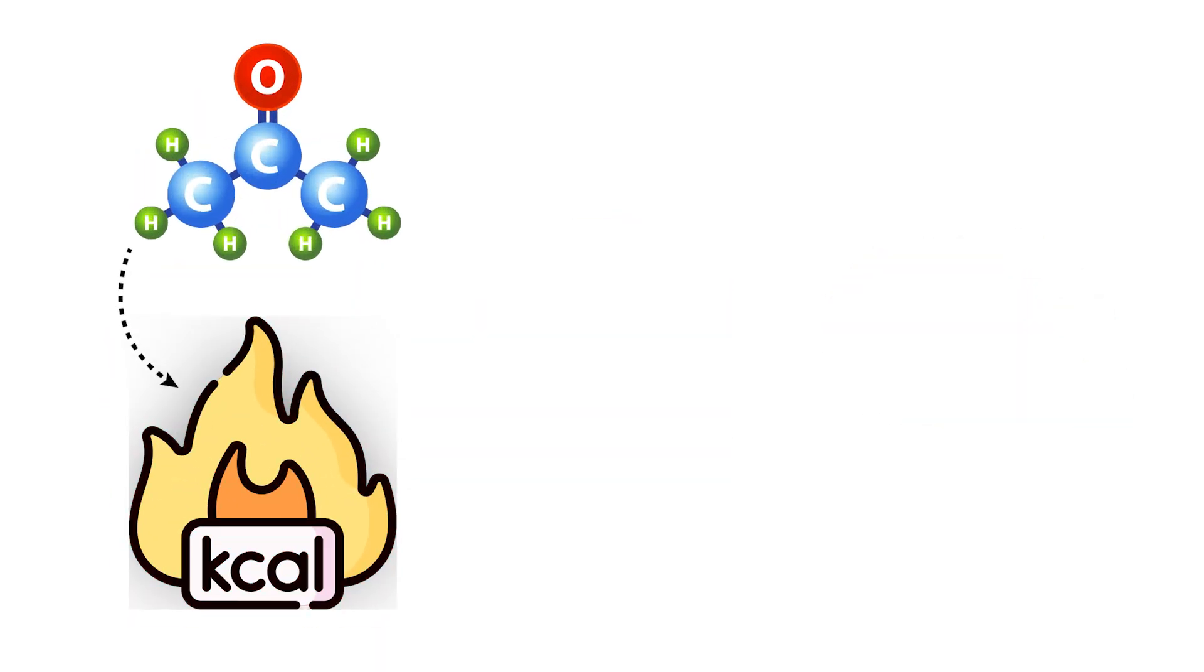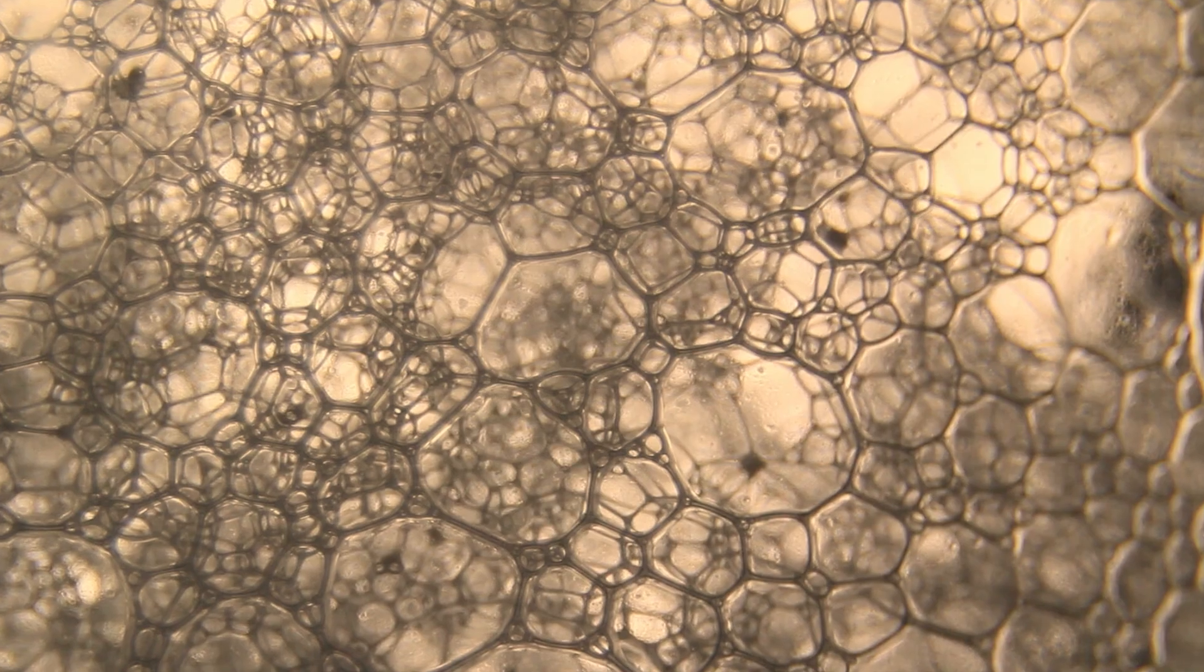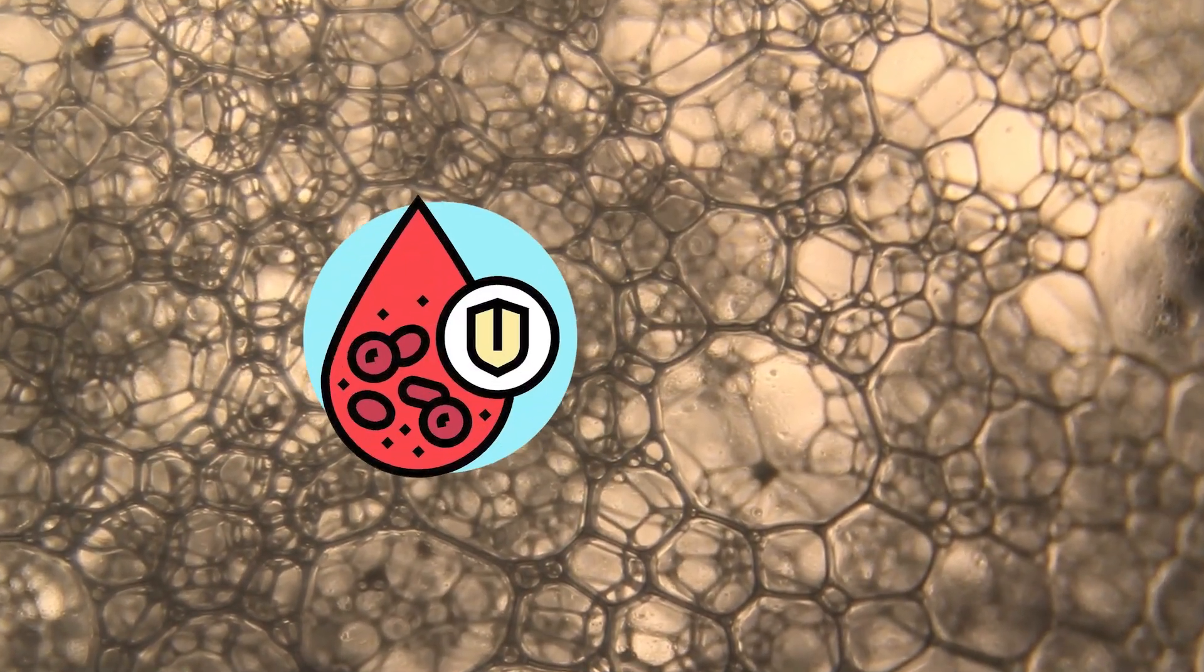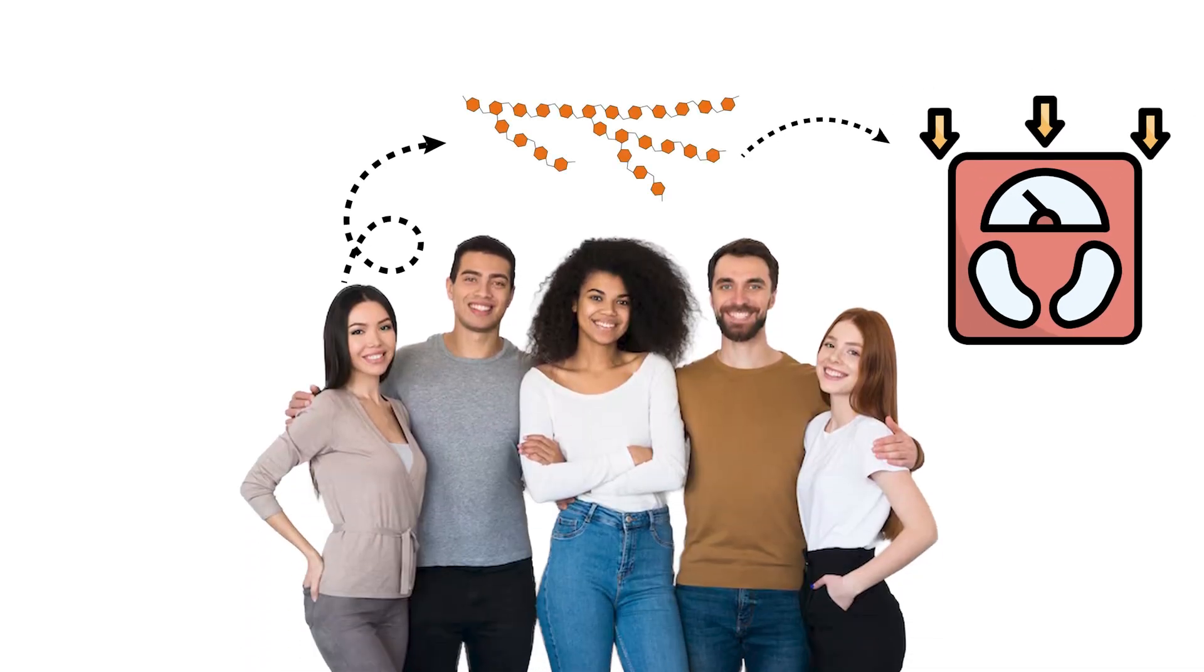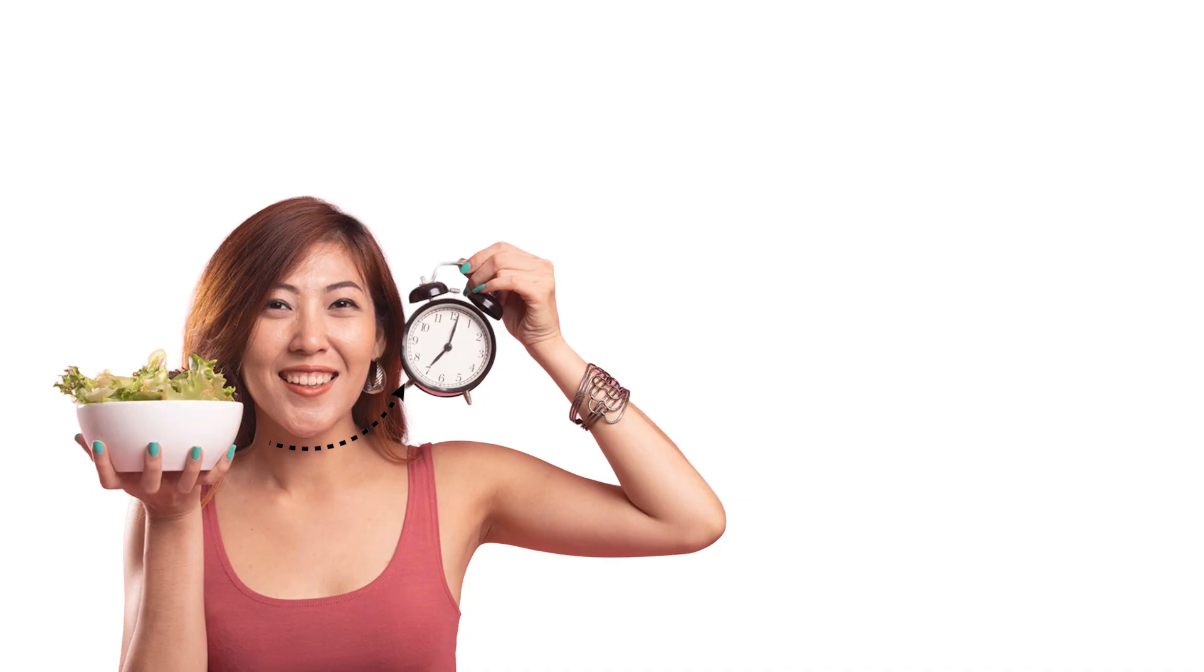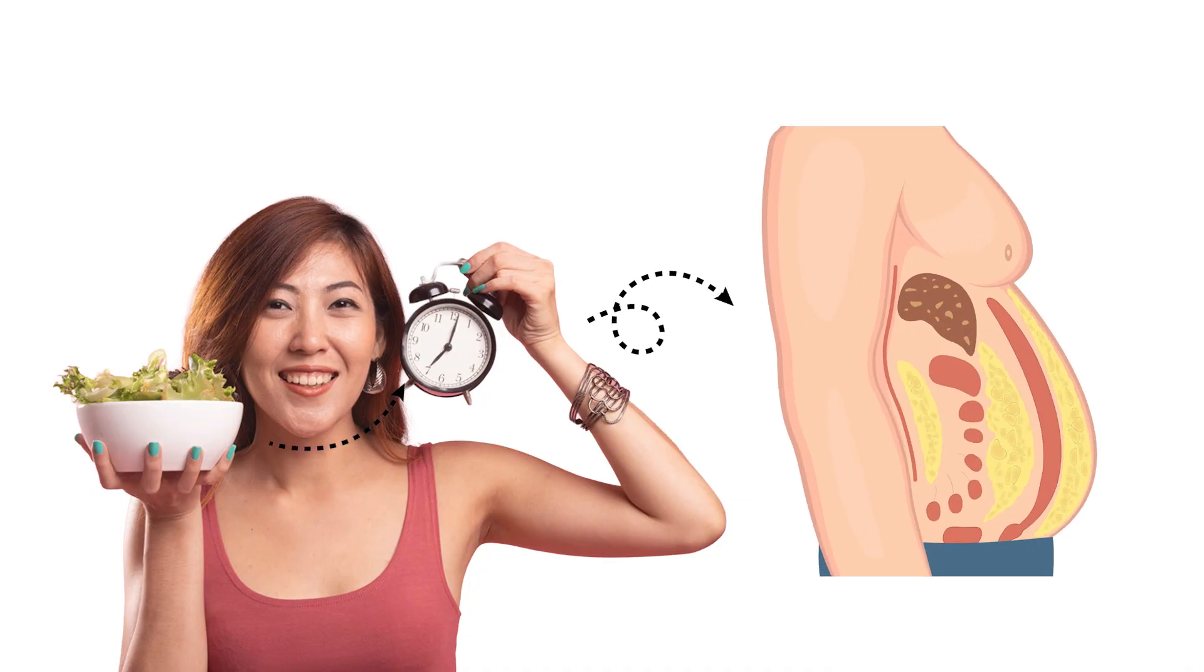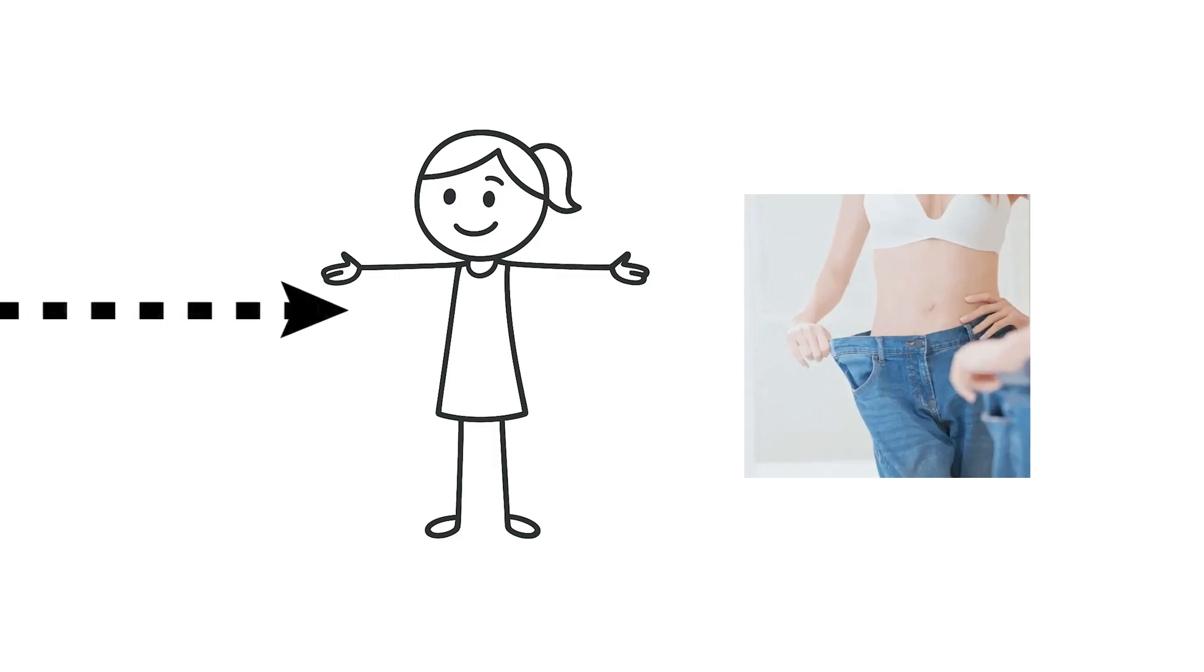Ketones do more than provide energy. They also work indirectly to lower oxidative stress and help cells repair themselves in ways that glucose cannot. But for most people, the main thing they care about is how this helps them lose weight. When fasting becomes part of your routine, your body keeps returning to stored fat for energy, and before long, your clothes fit better and your waistline is down.